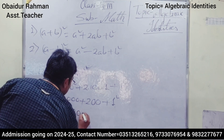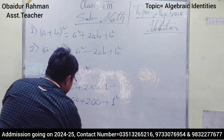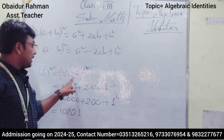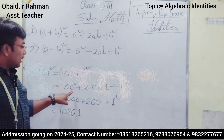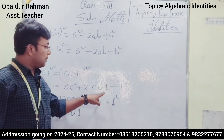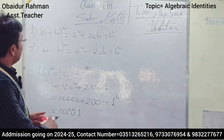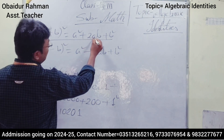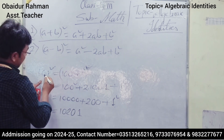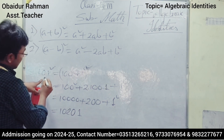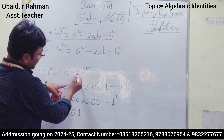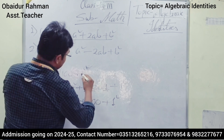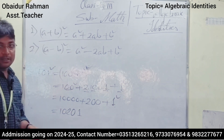So 101² = 10000 + 200 + 1 = 10201. That's it. So (100 + 1)² equals 100² + 2ab + b². You just put the same values in the same places — a = 100, b = 1. Do you understand everyone?